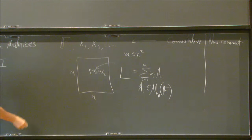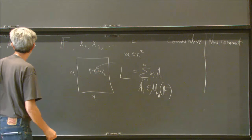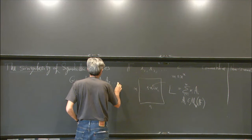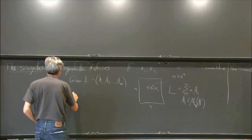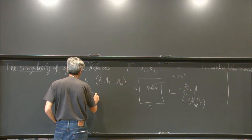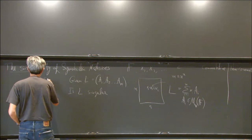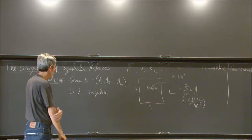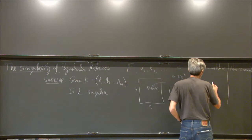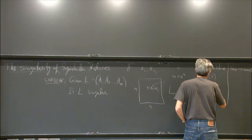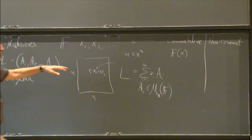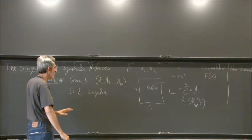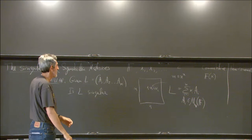The main question will be: given such an L — given as this tuple of matrices — we want to know is L singular? In the commutative case, we want to know whether it's singular or whether we can invert it over the field of rational functions in these variables. I just want to know whether it's singular or not.